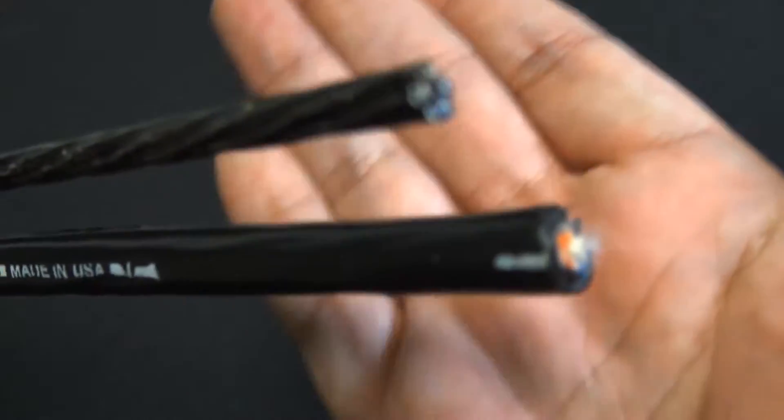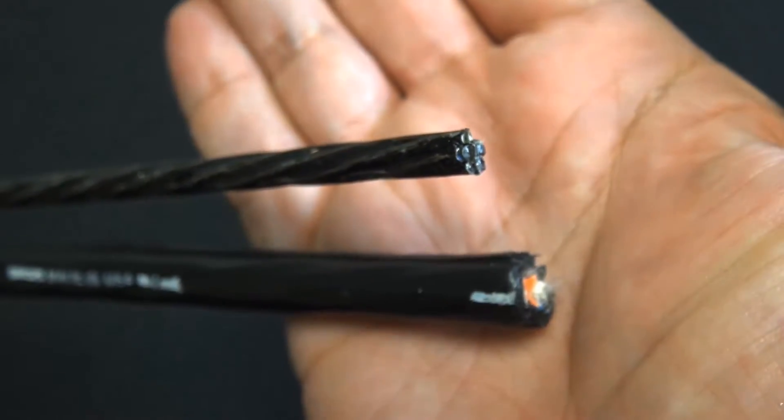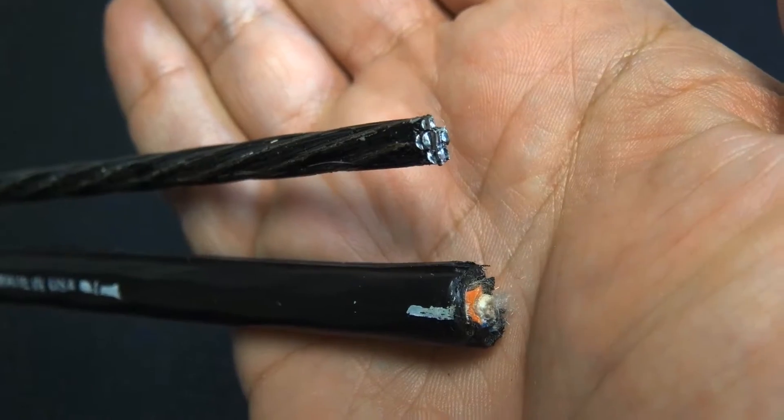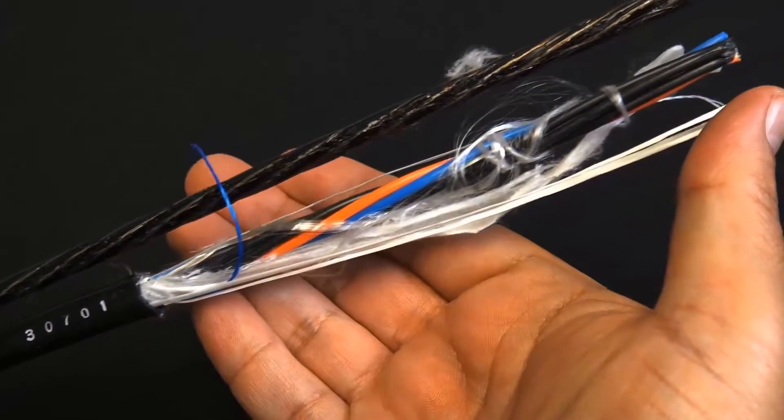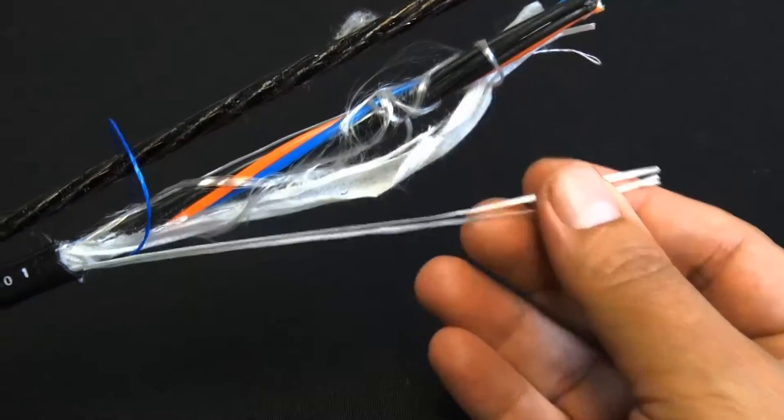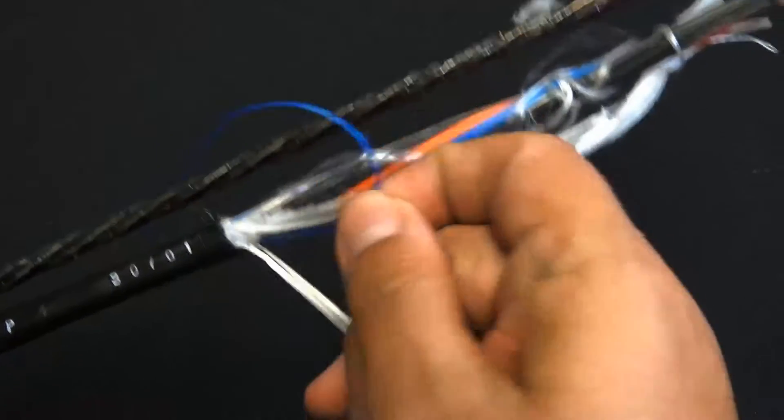There's the steel messenger—that's a seven strand steel messenger, industry standard quarter inch. And there's a look at the outer jacket stripped. There's the rip cord right there.